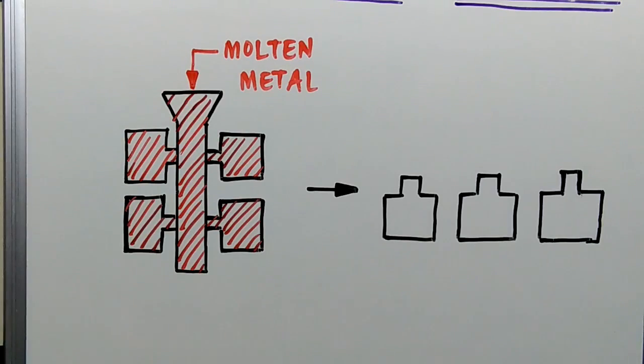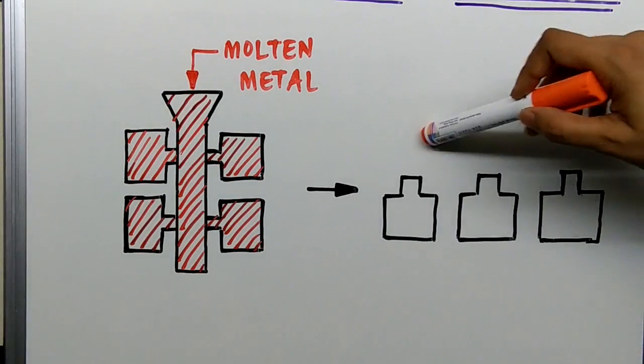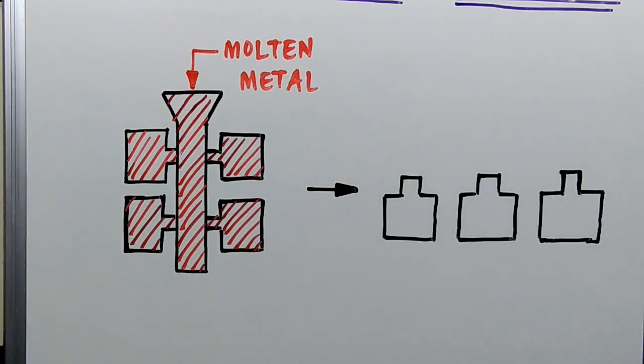After solidification process, the ceramic shell is then broken down with the help of vibration techniques and this is the casting which we get. This is the final product which we get.